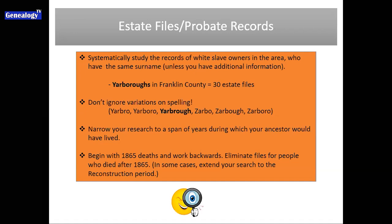You may have additional information — you may know already that your ancestor had a name change, or that where they were in 1870 was not where they had been in 1865. When I started out, I didn't know anything about my ancestors, so I began looking at Yarboroughs in Franklin County, North Carolina, and there were 30 estate files for Yarboroughs prior to emancipation. This included variations on the spelling of the name: Yarborough, Yarboroughs, Arboroughs, and there was even a Garborough with a G.